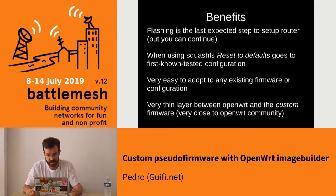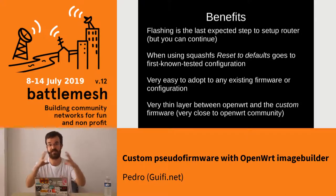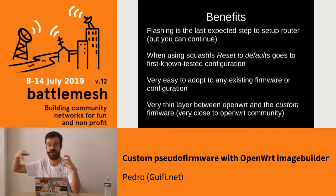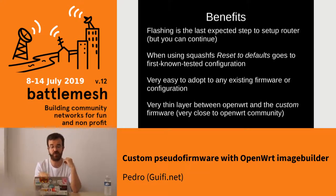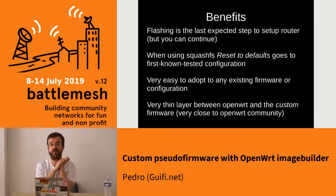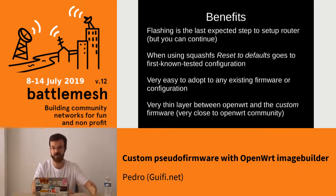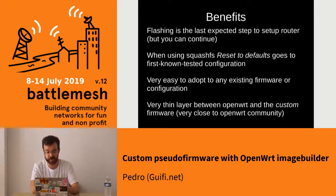The benefit is that after you flash the device it has the expected setup in the router, but you can continue — it's like a good snapshot where everything works. After that you can add things, and if things go wrong you can reset to defaults, in case you are using a SquashFS image. It's very easy to adopt to any existing firmware or configuration. This network works with Babel? Take the configuration file, see what things you want static and what things dynamic, and replicate the firmware — finding exactly the versions you need for compatibility with the existing network. This is a very thin layer between OpenWrt and the custom firmware, so very close to the OpenWrt community.